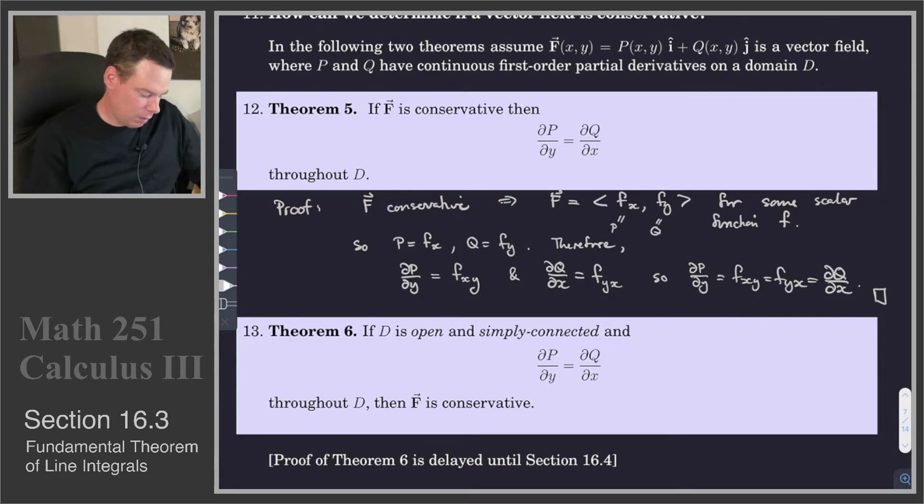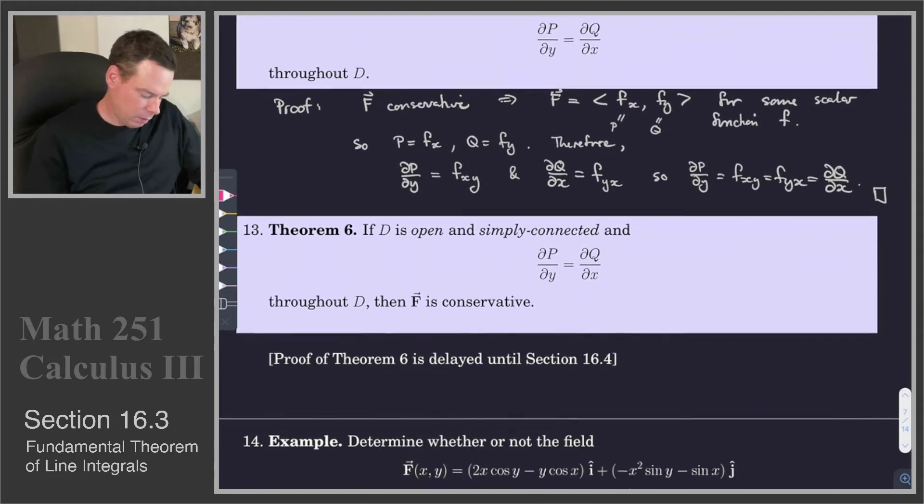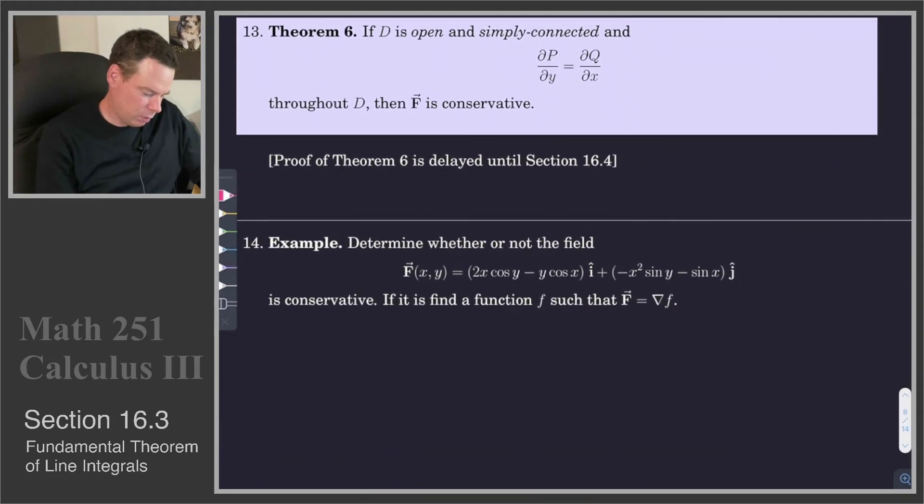But it is a very nice result because it tells us if I have a vector field and I want to know, is it conservative? Well, if I'm on an open and simply connected domain, I just need to take the derivative of its first component with respect to y, see if I get the same thing as taking its derivative of the second component with respect to x. So let's see an example of how we can use this result.